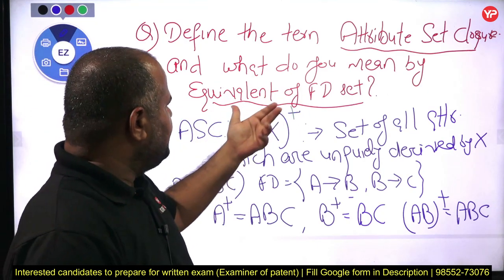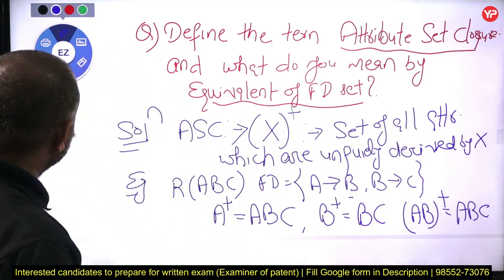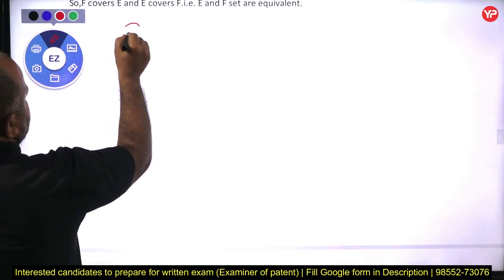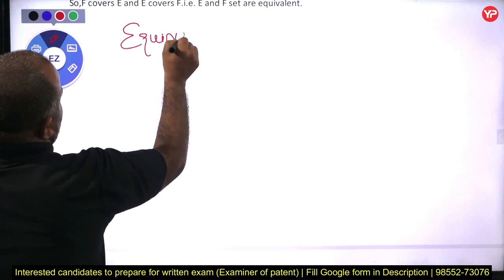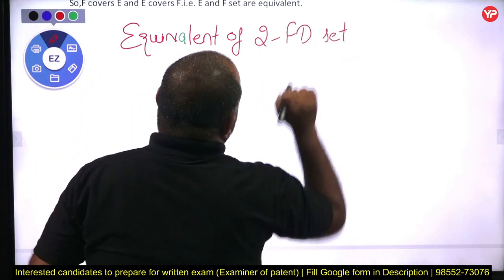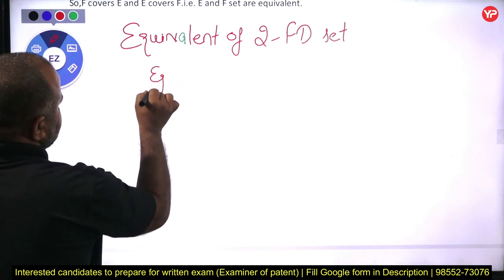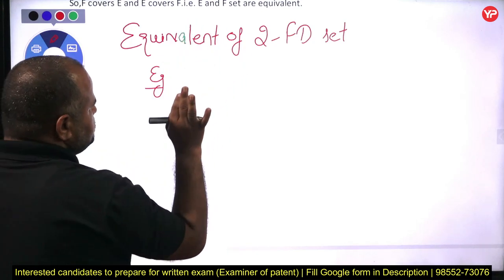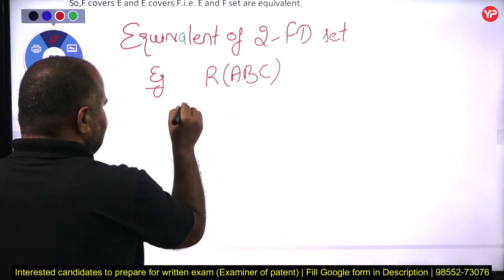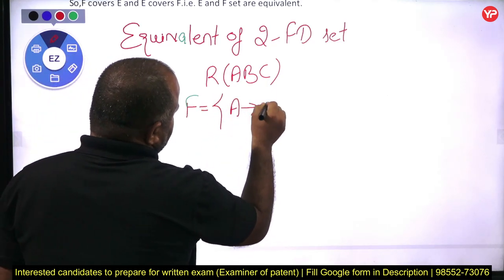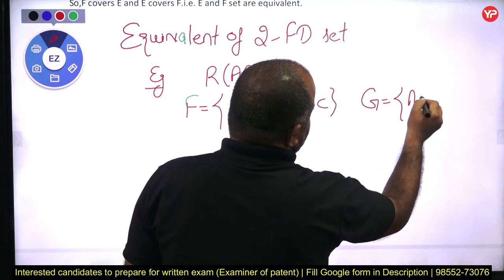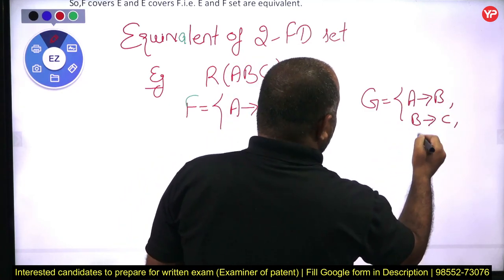Now the second problem is how to find out the equivalent of two FD sets. If I want to find out equivalent of two FD sets, let's go with an example. We have a relation R with attributes A, B, and C. We have one FD set F: A determines B and B determines C. And we have another FD set G: A determines B, B determines C, and A determines C.